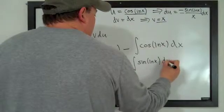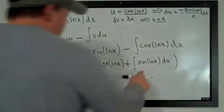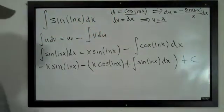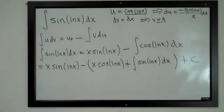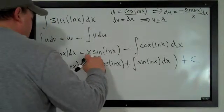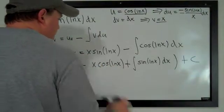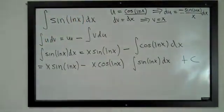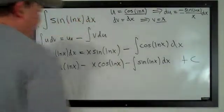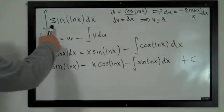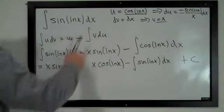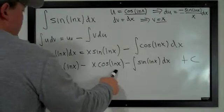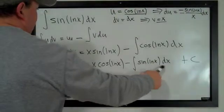So we get plus sine of log x dx. Carrying through the minus sign and removing the parentheses, this becomes a minus sign, giving minus sine of log x dx. So what we found is: the integral of sine of log x dx equals x sine of log x minus x cosine of log x minus the integral of sine of log x dx.